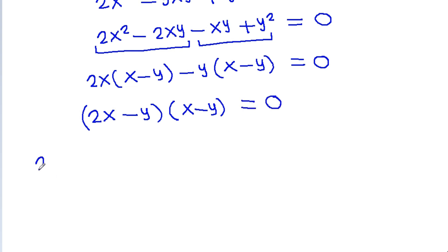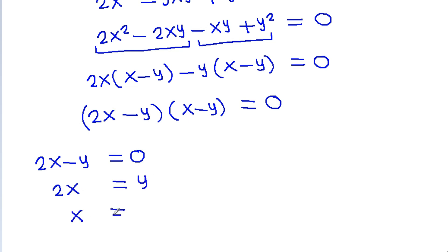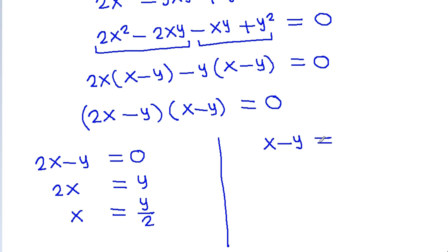Either 2x minus y equals 0, giving y equals 2x, so x equals y over 2; or x minus y equals 0, giving x equals y.